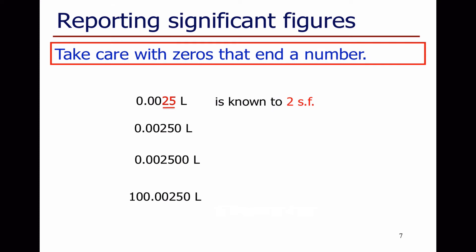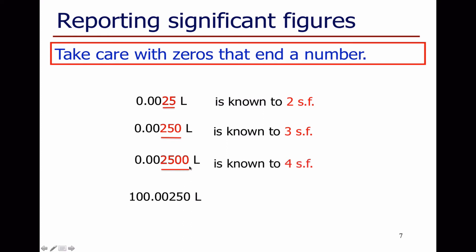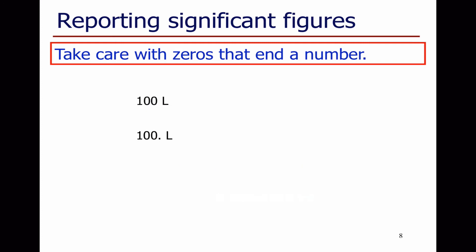We need to take extra care when zeros end a number. A number like 0.0025 has two significant figures — the 2 and the 5. But if a trailing zero is added, all three digits are significant including that zero, meaning the measurement is known to that last decimal place — three significant figures. Similarly, two trailing zeros indicates accuracy to four significant figures, and a number with accuracy known across all eight digits is known to eight significant figures. Take care with zeros that end a number.